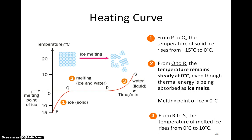Here comes my question. From P to Q, the substance is in solid state. From R to S, the substance is in liquid state. But how about from Q to R, the horizontal part of the graph? Melting starts at Q and ends at R. From Q to R, only a part of the ice has melted. The part that has melted will be in liquid state as water, while the part that has not melted will remain in solid state as ice. Hence, from Q to R, the substance is a mixture of solid ice and liquid water.